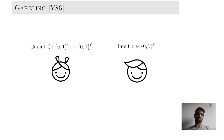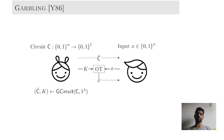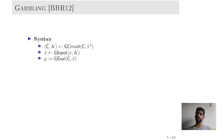Yao suggested the following elegant idea. First, Alice computes the garbling of her circuit C and sends it over to Bob. Bob then retrieves the appropriate secret information regarding this garbled circuit from Alice. Then Bob evaluates the garbled circuit on the garbled input to obtain the output C of X. Garbling as a standalone primitive was formalized much later by Bellare, Hoang, and Rogaway.